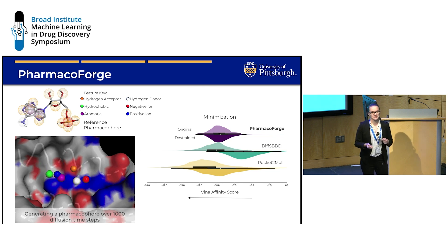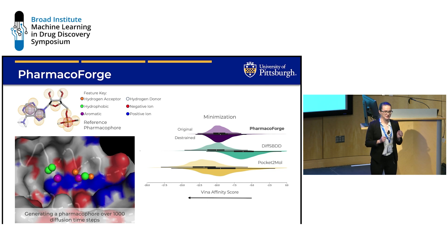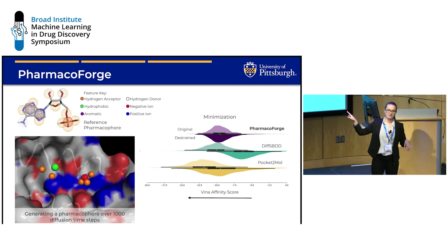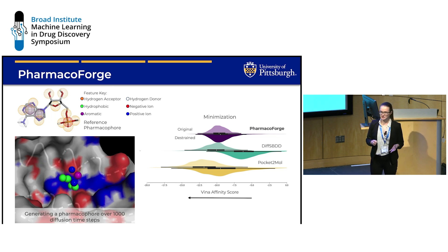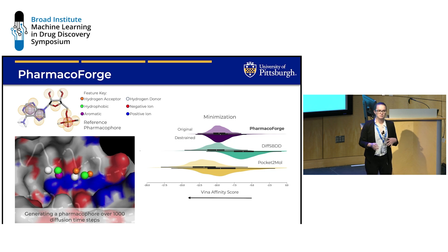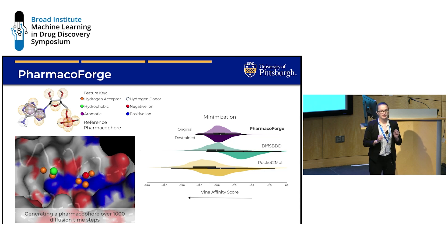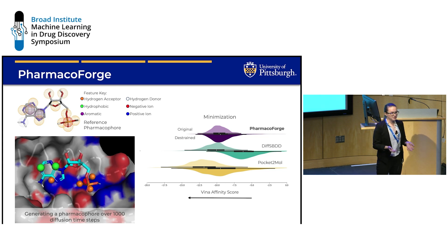Traditionally, these pharmacophores are made using a reference ligand, as you can see here with our reference pharmacophore. Domain expertise is then required to tweak the pharmacophore so you can get a unique set of ligand results. We wanted to design a way to more easily and quickly generate pharmacophores that give us a set of high quality and unique ligand results when we query with them.